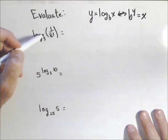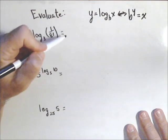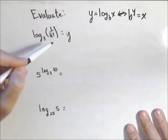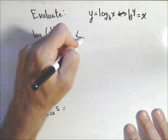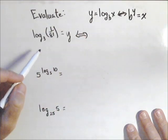For the first one, we have log base 3 of 1/81, and we want to simplify that. What we might do is set it equal to something, say y, so it looks similar to our definition above. Now we're going to rewrite it as an exponential equation.